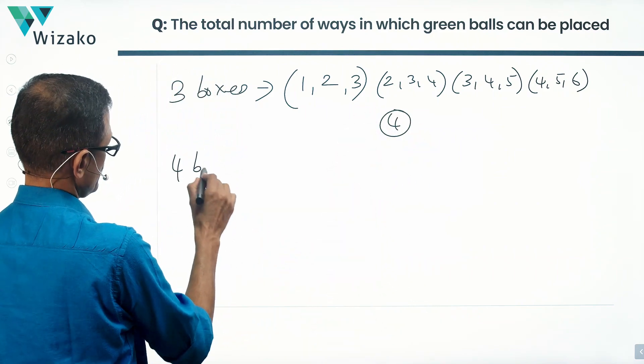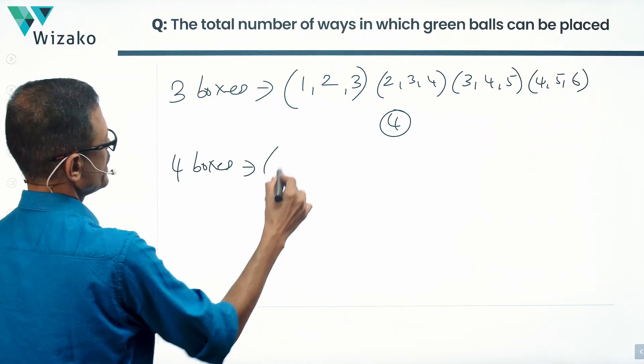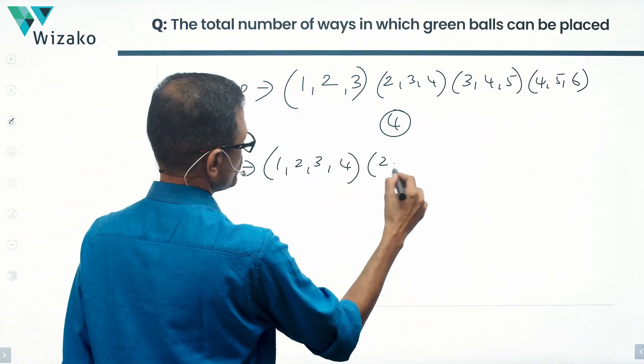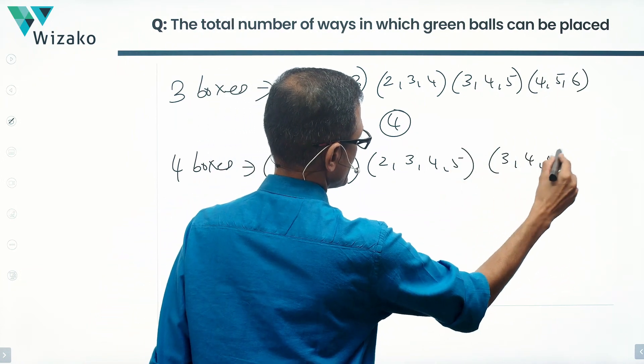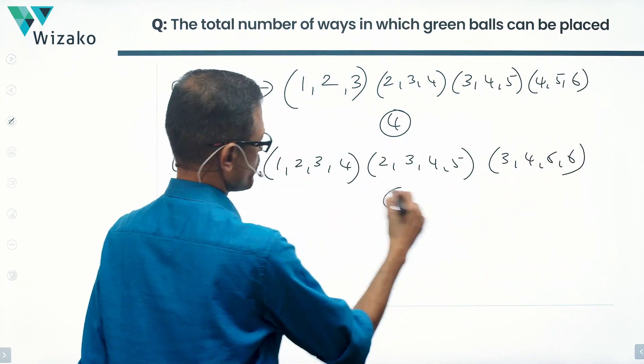4 boxes. What would those be? 1, 2, 3, 4, then 2, 3, 4, 5 and then 3, 4, 5, 6. So that is 3 such possibilities.